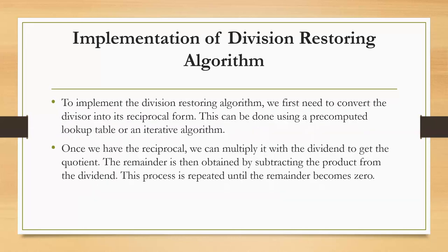Implementation of the Division Restoring Algorithm. The Division Restoring Algorithm is used to divide two binary numbers. It starts by setting the dividend, divisor, and quotient to zero. Then it compares the dividend with the divisor. If the dividend is greater than or equal to the divisor, it subtracts the divisor from the dividend and sets the quotient bit to one. Otherwise, it shifts the dividend left by one bit and sets the quotient bit to zero.